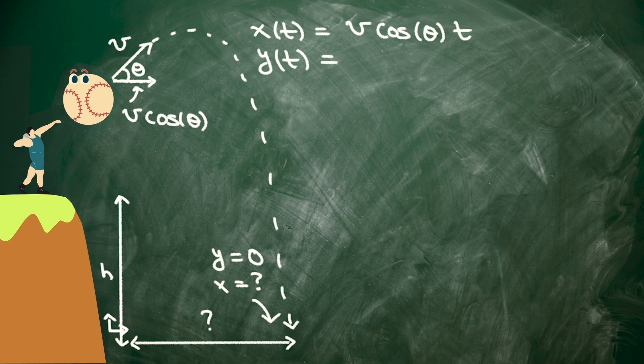Now, in the y direction, the ball has acceleration minus g, and it starts at height h above the ground. So the trajectory is h minus 1 half g t squared plus the initial vertical velocity, that's v sine of theta, times t.